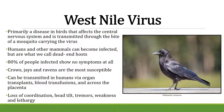West Nile virus primarily affects birds, attacking the central nervous system, transmitted through the bite of an infected mosquito. Humans and other mammals can become infected but are dead-end hosts — we get it and don't pass it on. 80% of infected people never show symptoms. The most susceptible birds are crows, ravens, and jays. It can be transmitted person to person through organ or blood transfusions, or from mother to fetus. Symptoms include loss of coordination, head tilt, tremors, weakness, and lethargy.